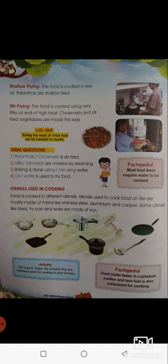Utensils used to cook food on fire are mostly made of metal like stainless steel, aluminium, and copper. Some utensils like tawa, fry pan, and woks are made of iron. Looking at the picture: the first one is a wok, the next is a fry pan, then a pressure cooker (also called a cooking pot), another fry pan, a griddle, a saucepan (also called a casserole pot), and a ladle.